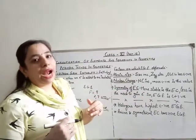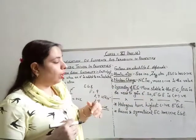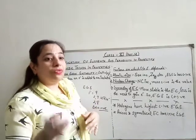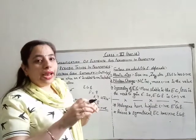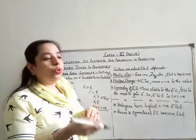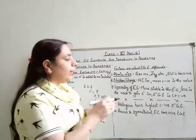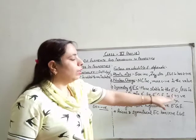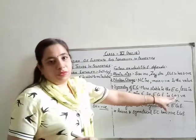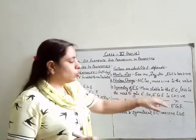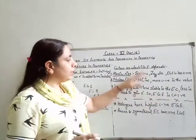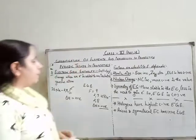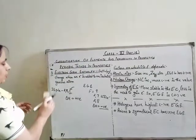If we have to add an electron to a stable symmetric configuration, the energy we must supply to force the electron to be added to the atom will be positive. These are the factors on which electron gain enthalpy depends.